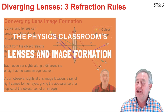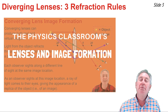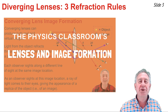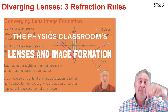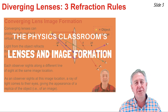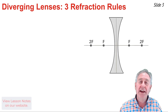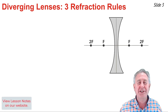In a previous video, I discussed how both converging and diverging lenses refract light in order to produce images of objects. I've left a link to that video in the description section of this one. If you need to review it, one thing we learned in that video is that there are three rules of refraction for diverging lenses.